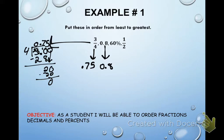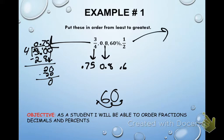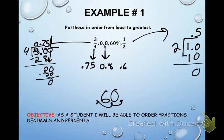For 60%, to turn a percent into a decimal, take off the percent sign and move the decimal two places to the left, giving us 0.60. For one-half, divide one by two: add a decimal and a zero, two goes into 10 five times, subtract and get zero. So one-half equals 0.5. Now we have four decimal numbers that are easy to compare.